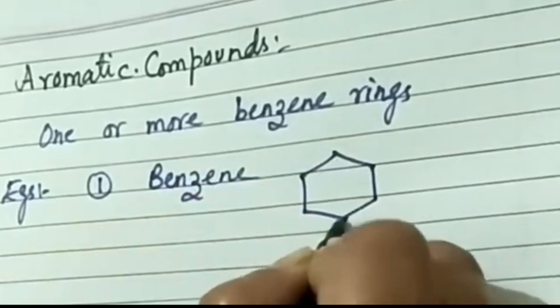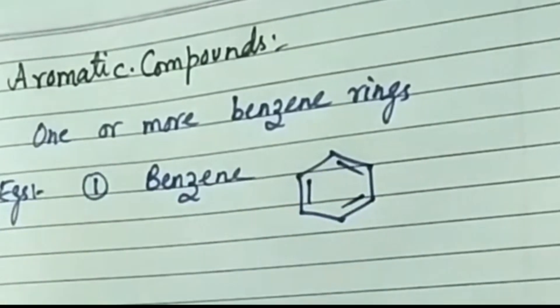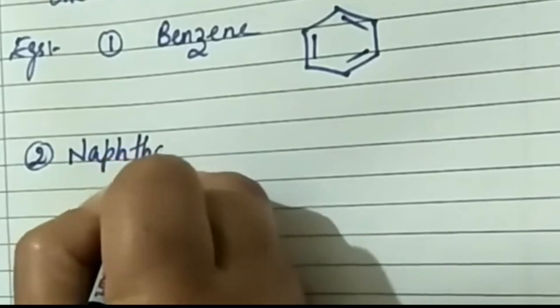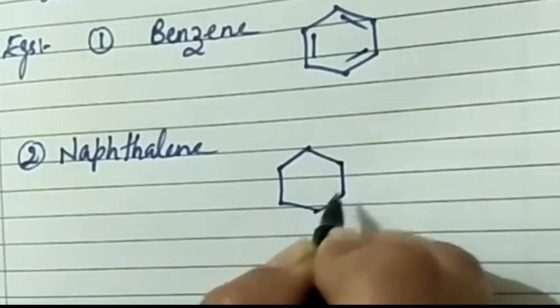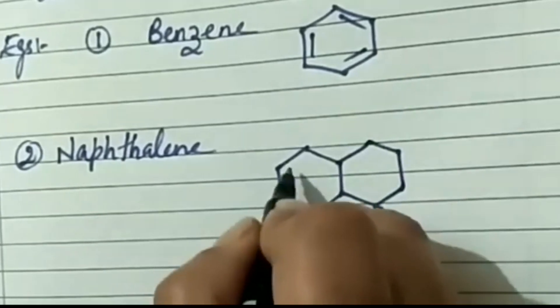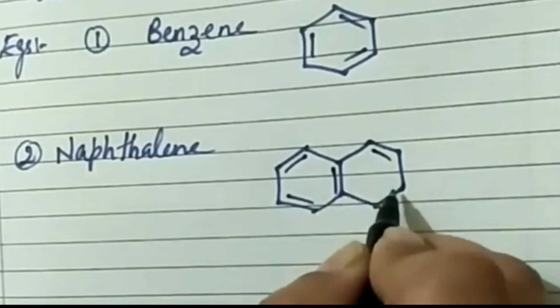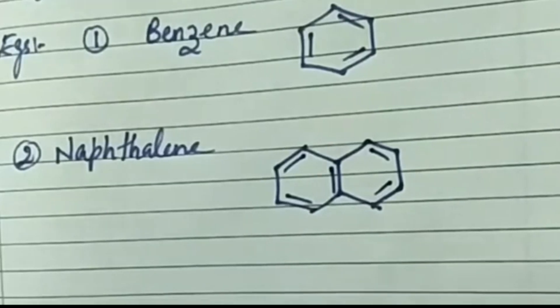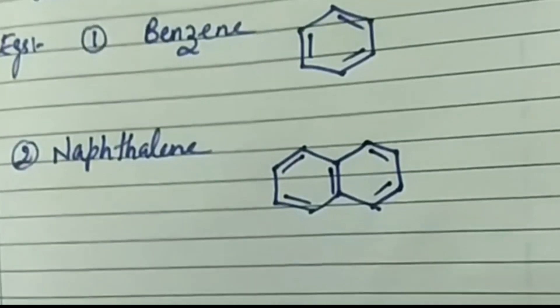We have just studied the structure of benzene — it contains six carbon atoms linked by alternate single and double bonds. Another common aromatic compound is naphthalene. Naphthalene contains two fused benzene rings with 10 carbon atoms, each present at a vertex, and has alternate single and double bonds. Naphthalene is used in the form of balls to protect warm clothes from insects.